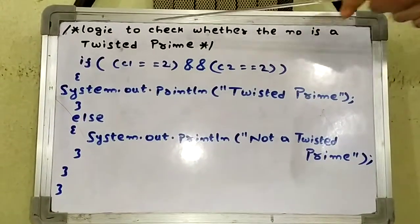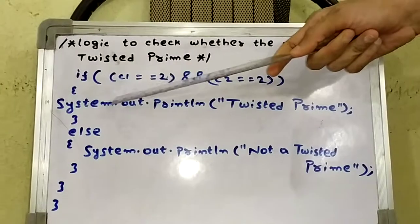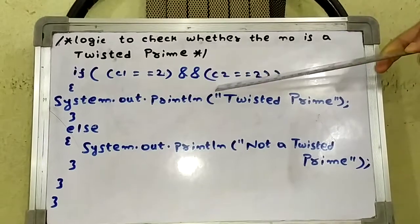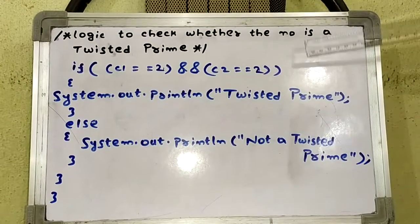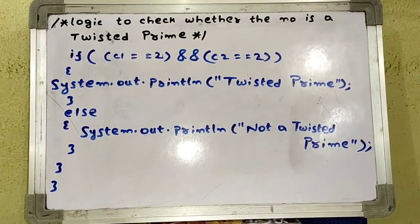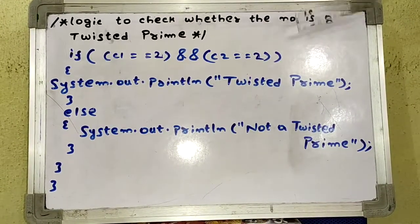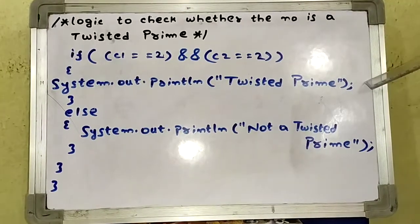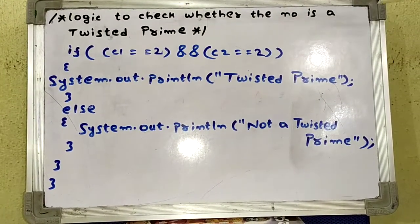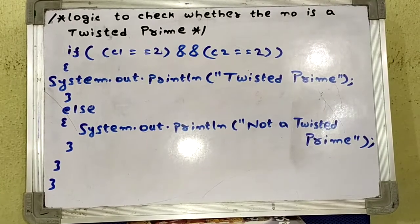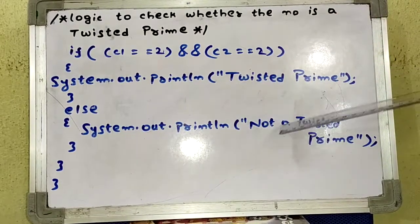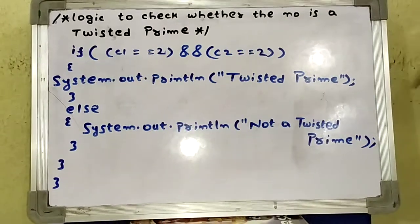This is the logic to check whether the number is a twisted prime or not. If c1 equals 2, the original number is prime. If c2 equals 2, the reverse of the number is prime. If both c1 and c2 equal 2, it signifies that both the original number and its reverse are prime — meaning it is a twisted prime, and this is printed using System.out.println. Otherwise, System.out.println prints 'not a twisted prime'. With this, the program ends.